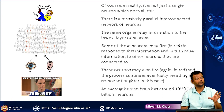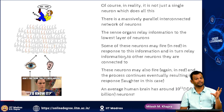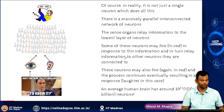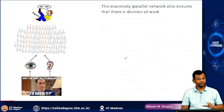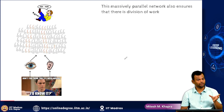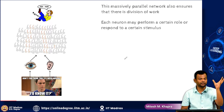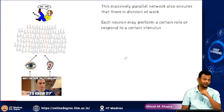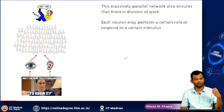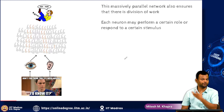When I say it is a massively parallel interconnected network, I really mean it — the average human brain has around 10 raised to 11, that is 100 billion neurons. And in this massive network, there is also a natural division of work. Each neuron may not perform all the tasks that humans perform. A single neuron may not be responsible for processing visual information as well as auditory information; it might just take care of certain information.